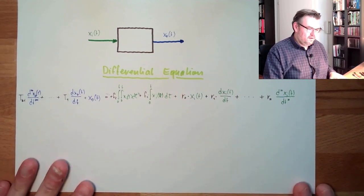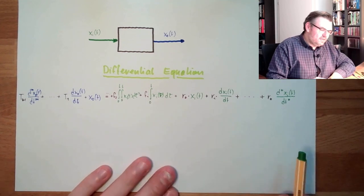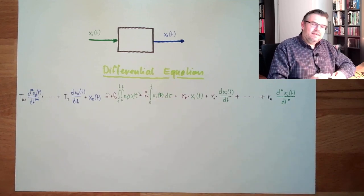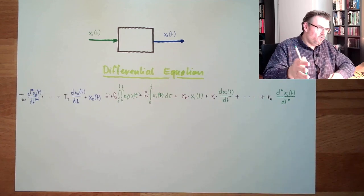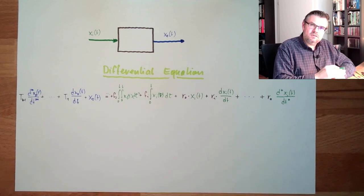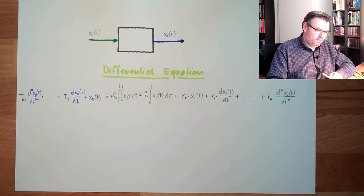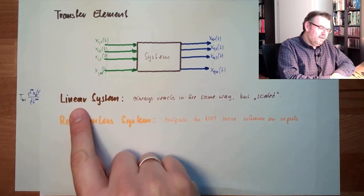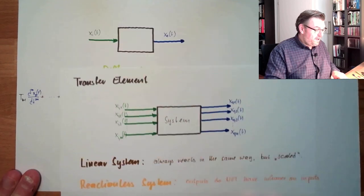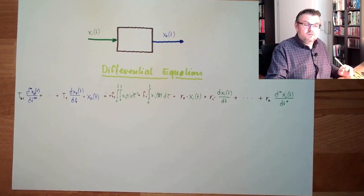Let's have a look at this differential equation. All those factors, all those xis and xos — they are only in linear terms. There is no xi squared, there is no xi to the third, and so on. There is only xi and xo, and their derivations and summations. There is no xi raised by the power of whatever. This is because we said our system theory is only for linear systems, and this is reflected in the differential equation by only using plain terms of xi and xo.